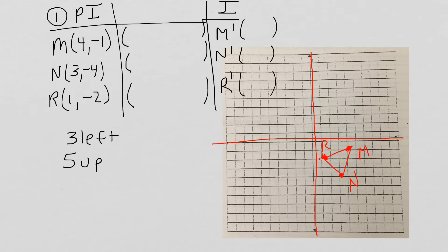Open up your MTT and we're going to do the first part of the quiz review on translations and reflections. The first thing we're going to do is write in our PI chart, fill in the ordered pairs that you were given, and go ahead and graph those ordered pairs for your pre-image.